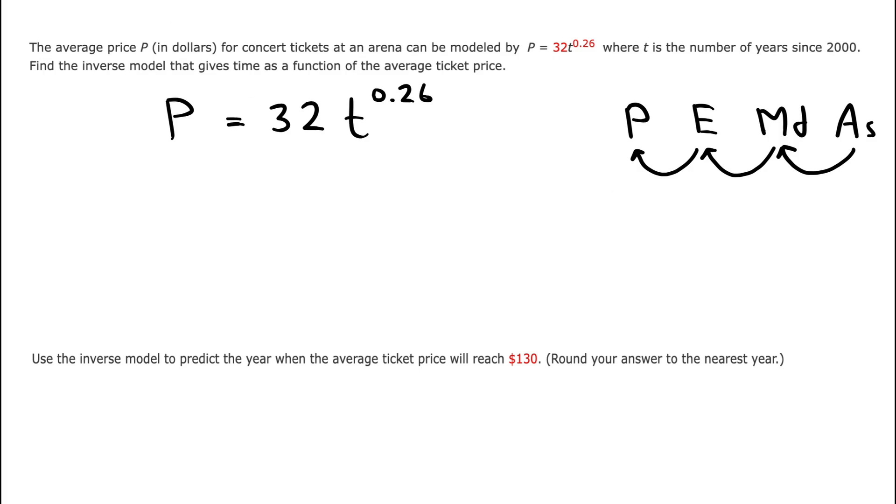So here there's no additions and subtractions, but we do have multiplication of the t by the 32. So we're going to undo that first. Let's divide both sides by 32 since division is the inverse of multiplication. We'll get this.